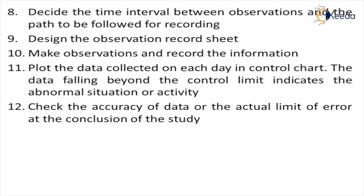Design the observation record sheet and record the information. Then plot the data in the control chart so that every observation can be evaluated against a standard level of performance. Data falling beyond the limits indicates an abnormal situation or a chance event has occurred. Finally, check for the occurrence of the data and the actual limit of error during the study, and at the end verify the accuracy of the data.